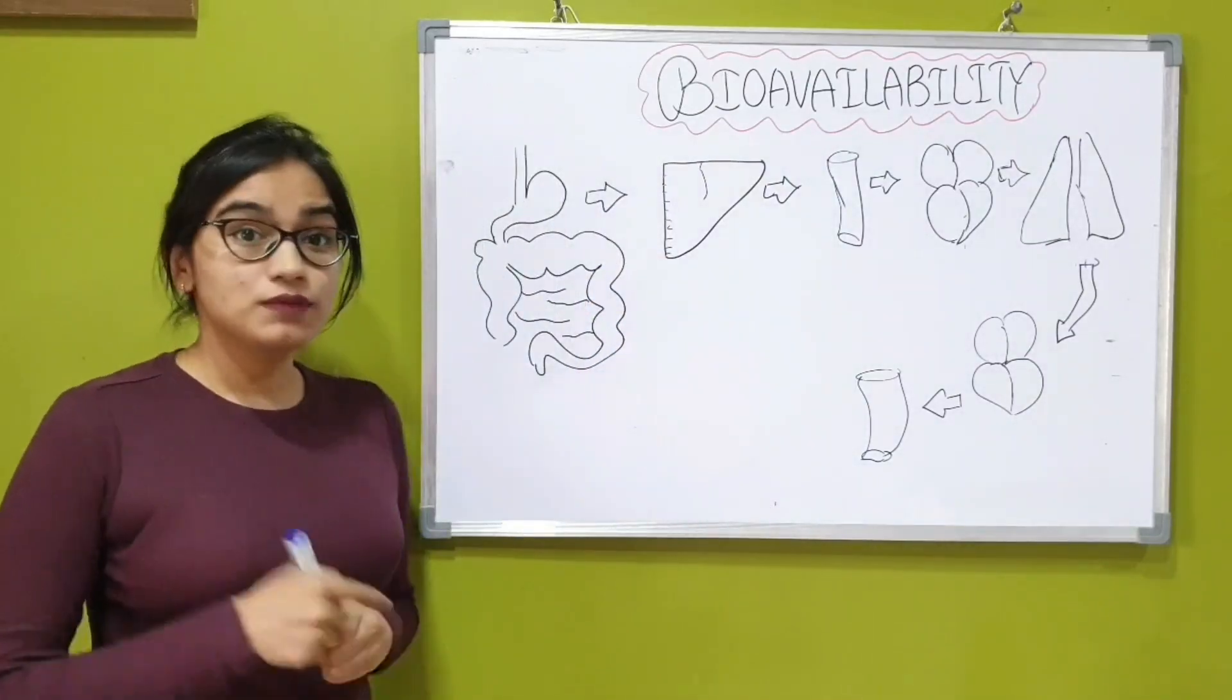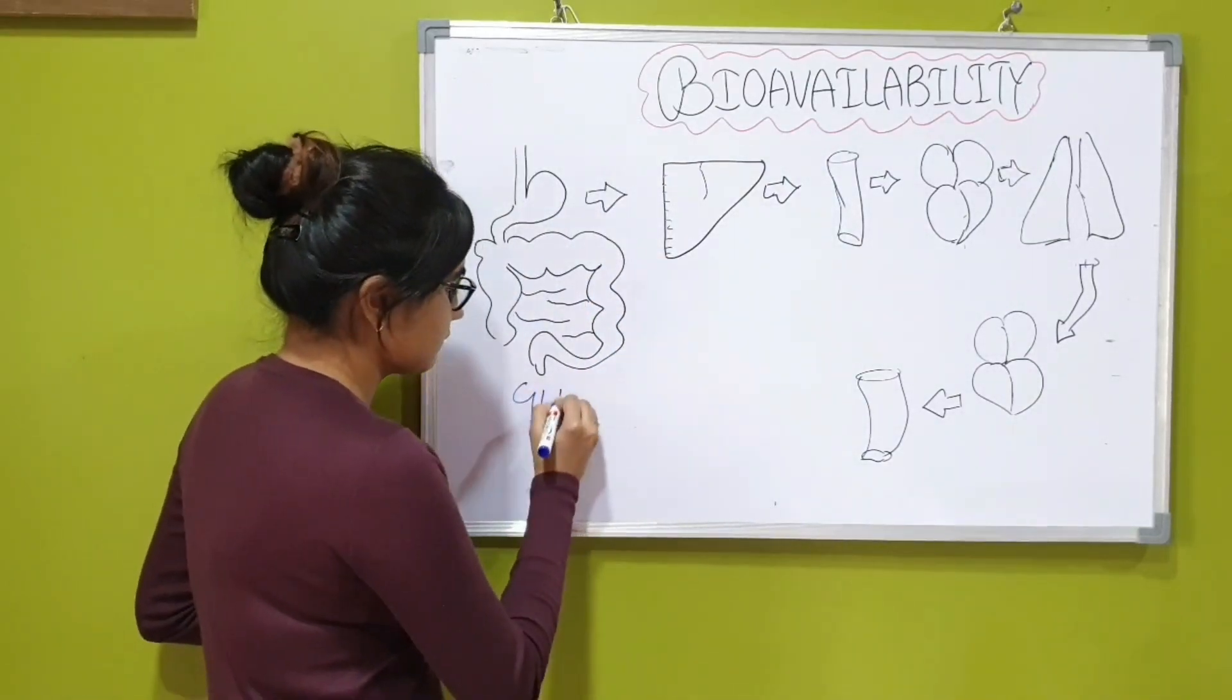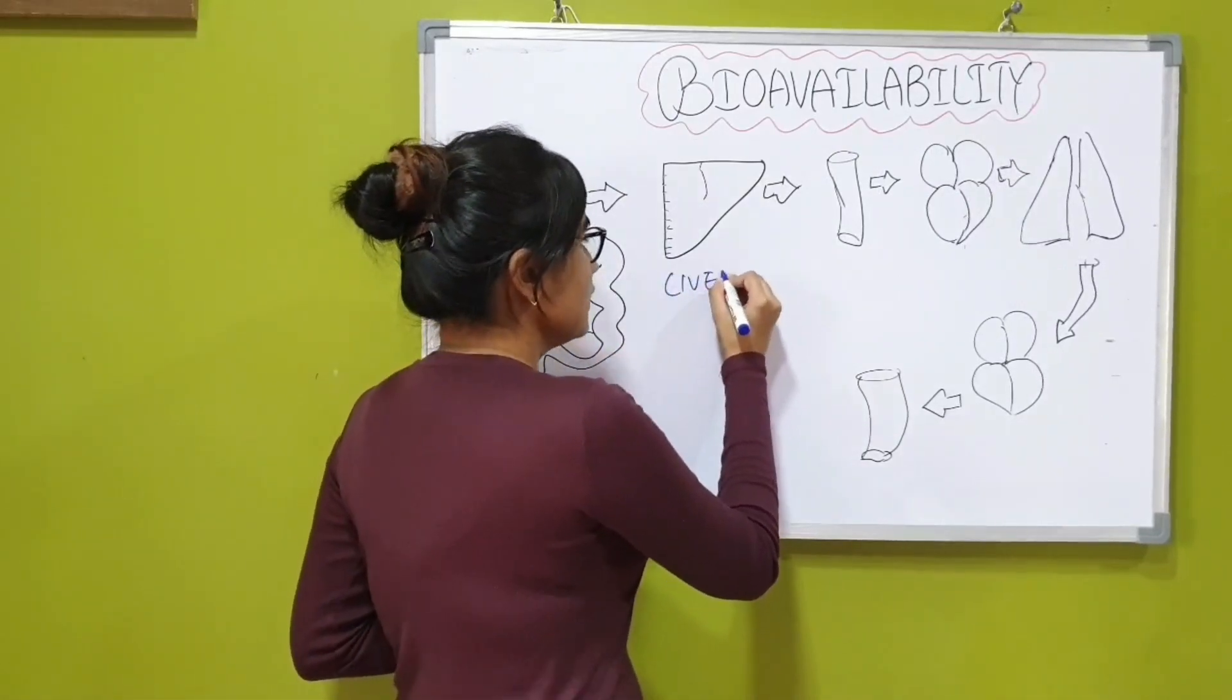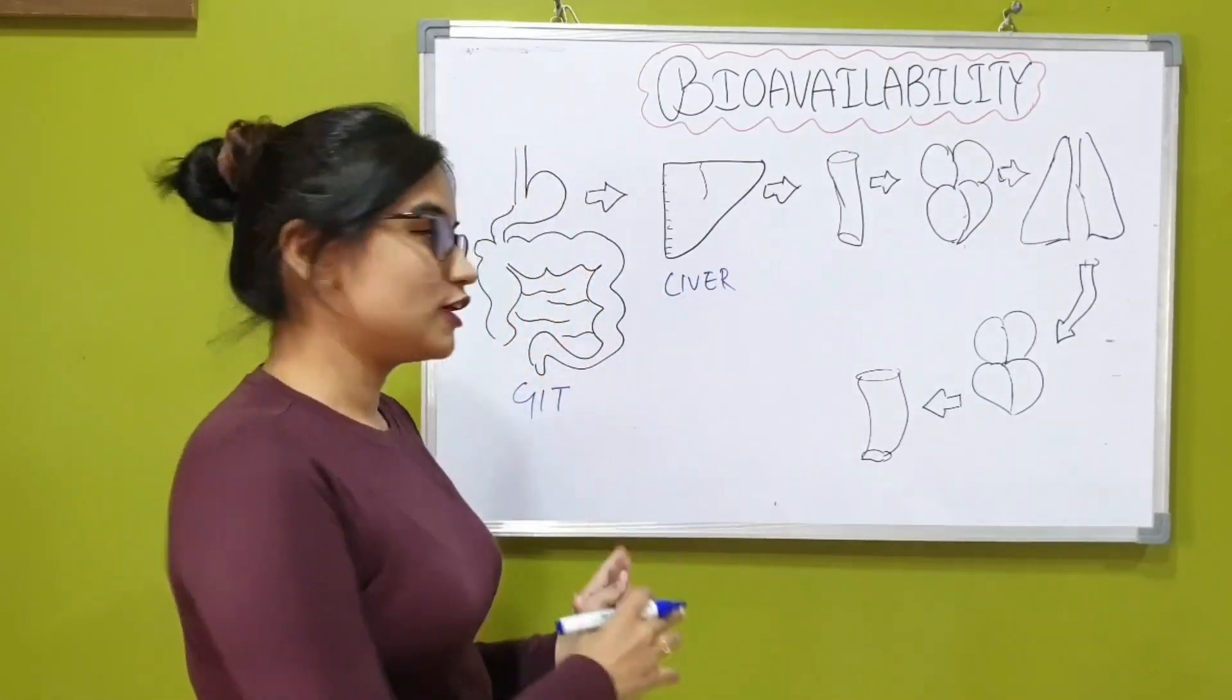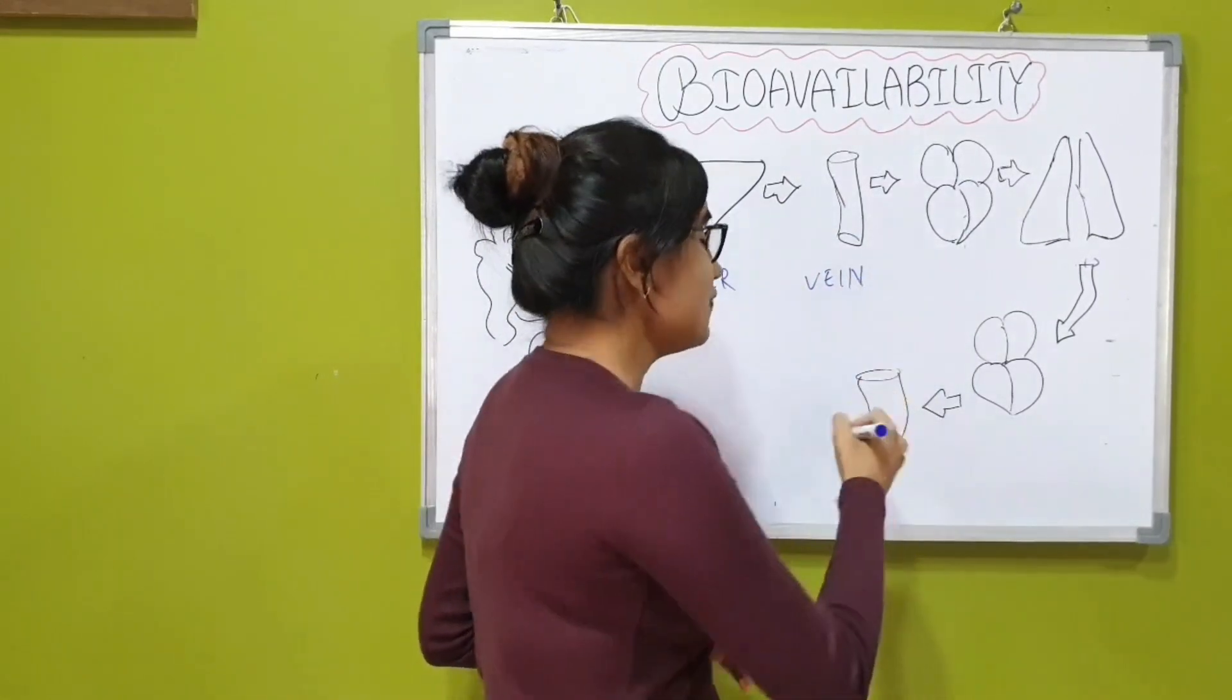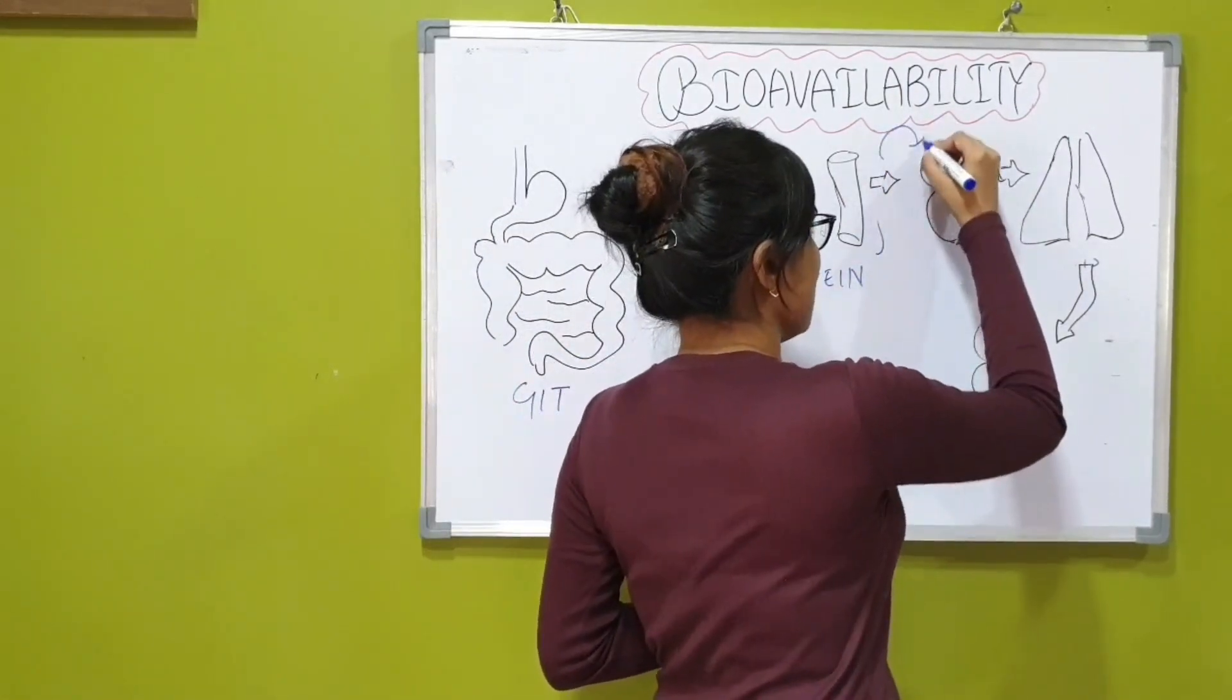The blood flows from GIT through the hepatoportal system into the liver. The blood then flows through the liver into the venous circulation through the hepatic vein and then to the right side of the heart.